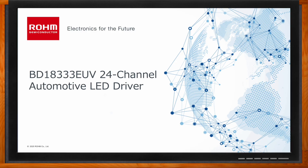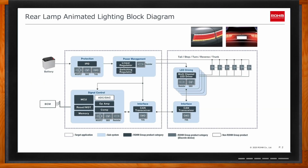So Catherine, can you set the stage for us and walk us through a typical application and where Rohm fits in? Here's a diagram of all the necessary blocks involved in making a car tail light — and the block diagram for a headlight looks very similar. Starting from the car battery on the left, we need some front-end protection and power management, usually handled on a separate board. Communication is handled from the body control module and sent to the lighting module, which is then passed down to the tail light itself.